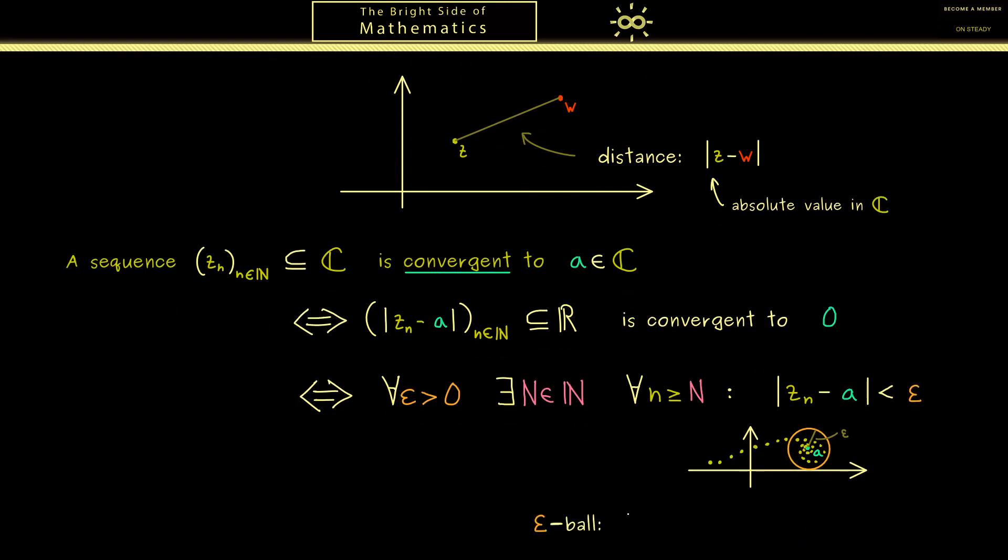And because this whole picture here is so important we call the inside of the circle an epsilon ball. And for the notation we use a capital B with index epsilon. Moreover the middle point a here we put into parentheses afterwards. Now by definition this is the set of all the complex numbers w with the property absolute value of w minus a is less than epsilon. So this is the definition of an epsilon ball in the complex plane.